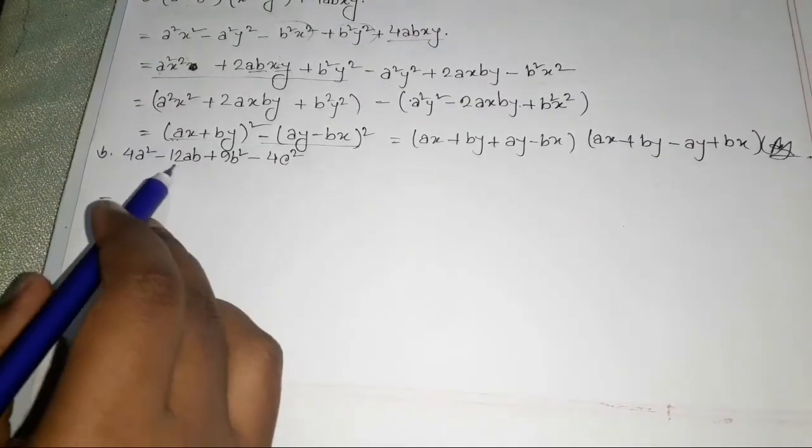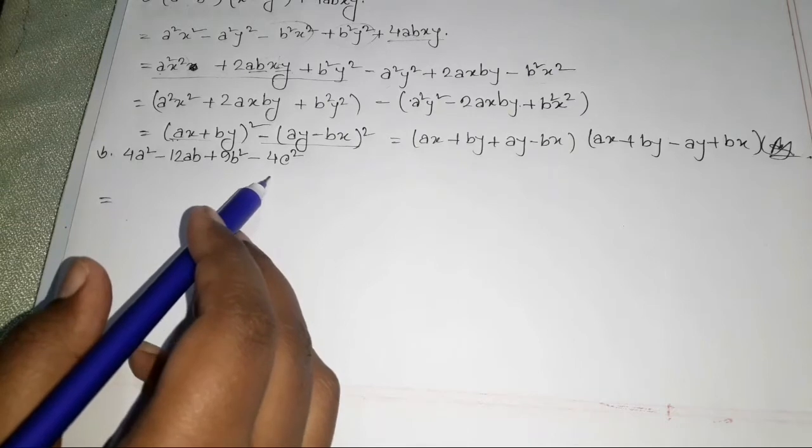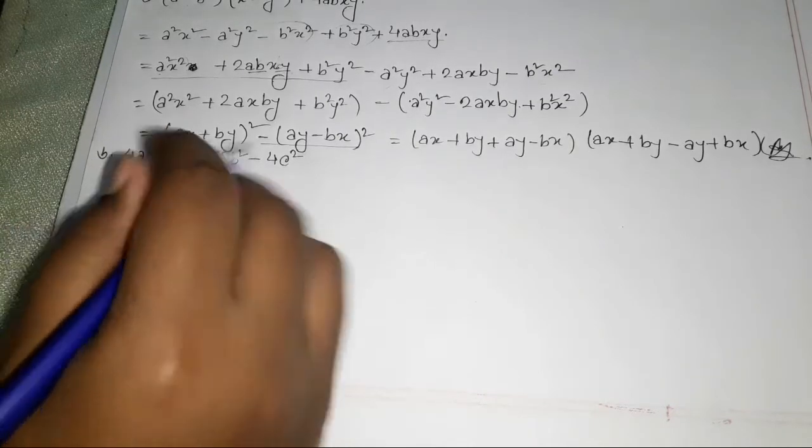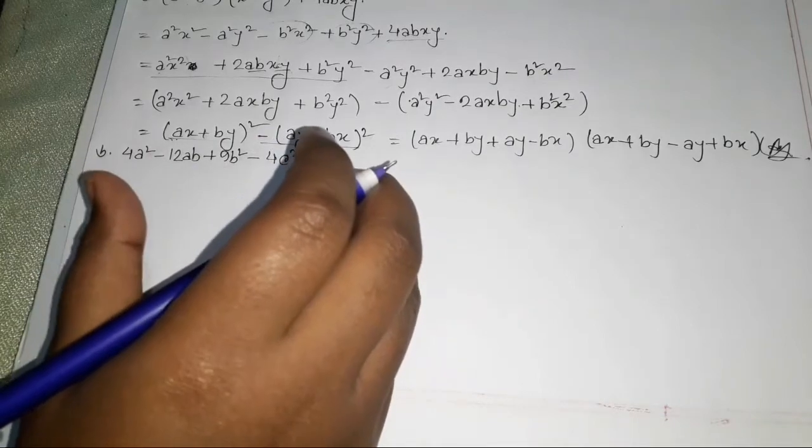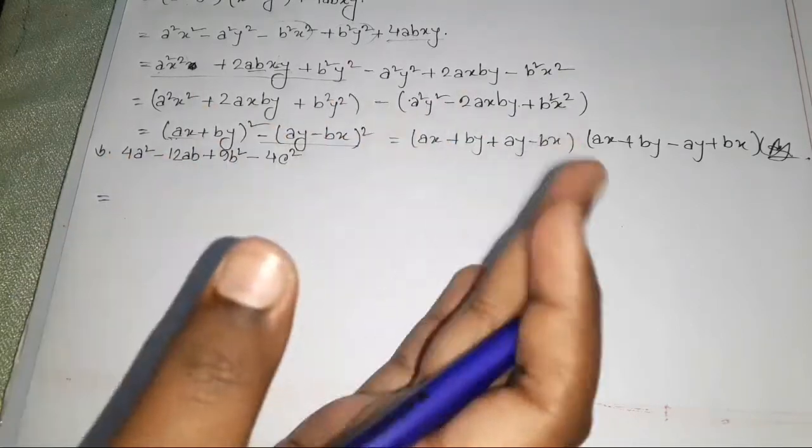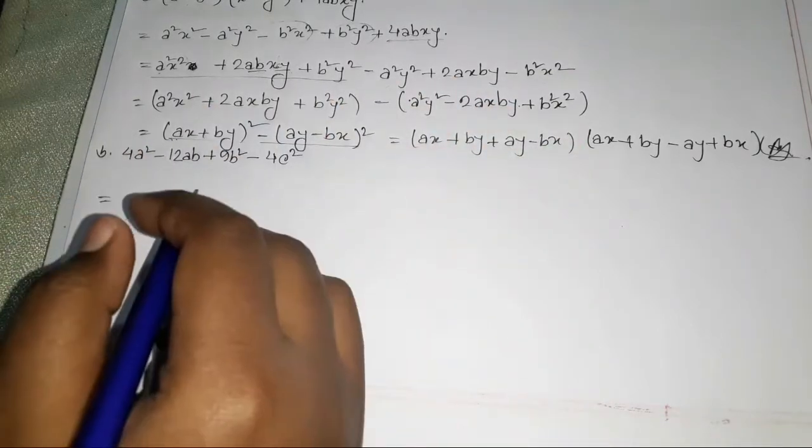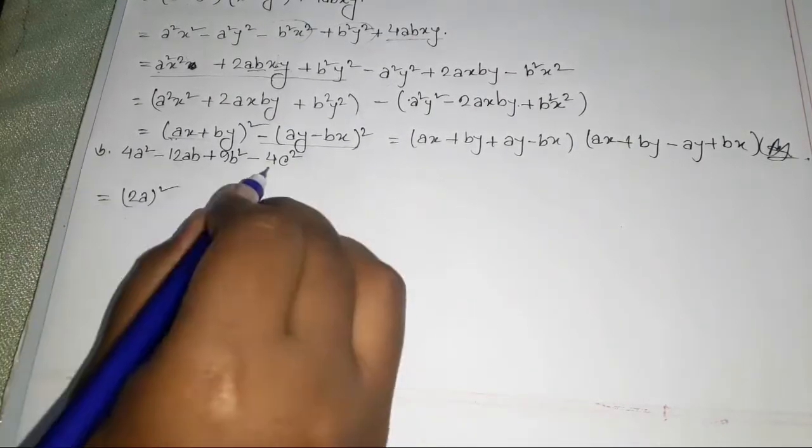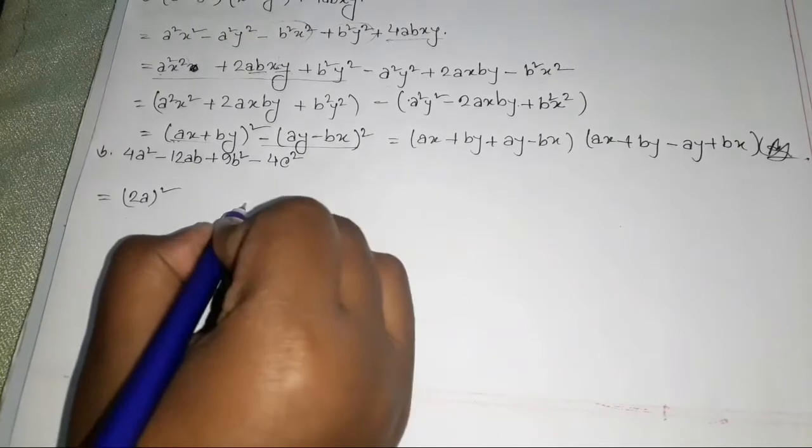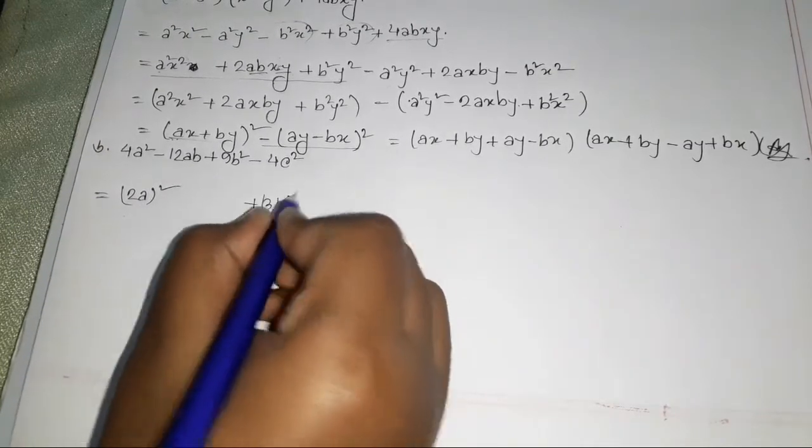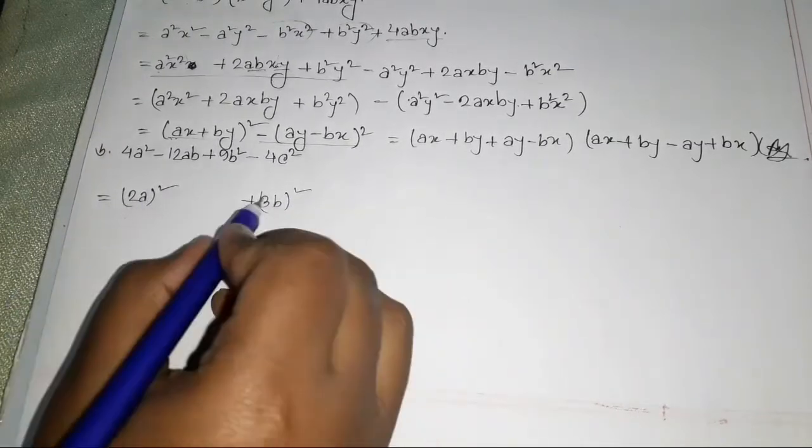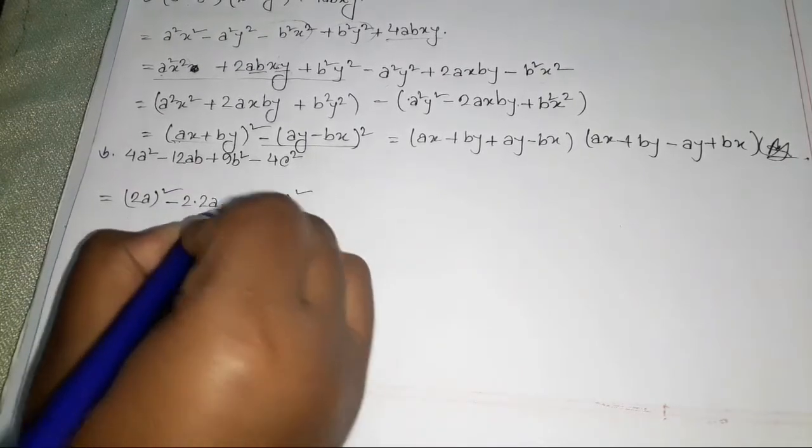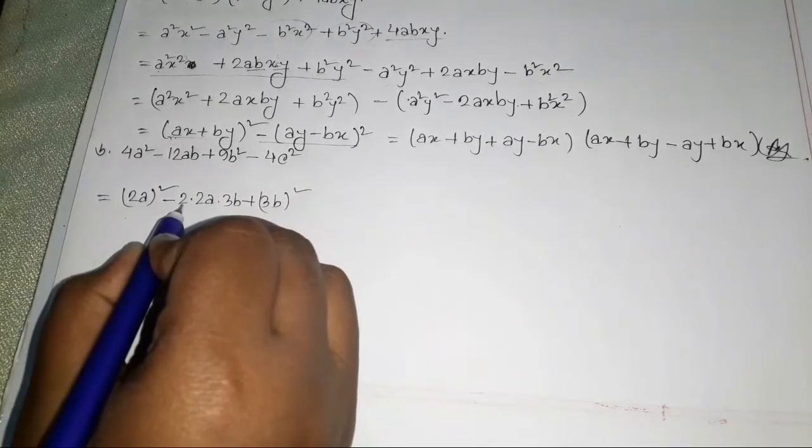Problem 6: 4a² - 12ab + 9b² - 4c². Now, what do we do about this? We have to recognize this pattern. We see 4a² and 9b² plus -12ab, so this is (2a - 3b)².